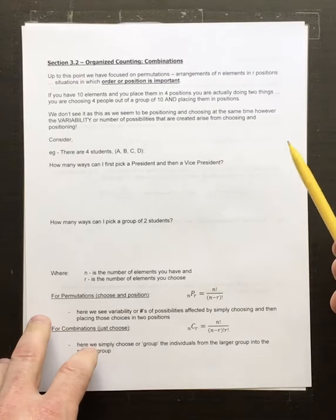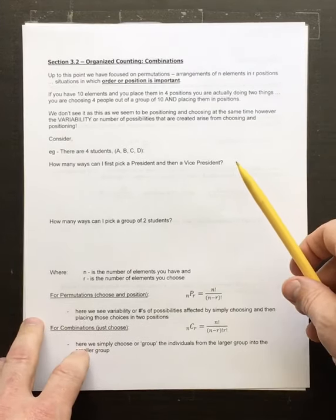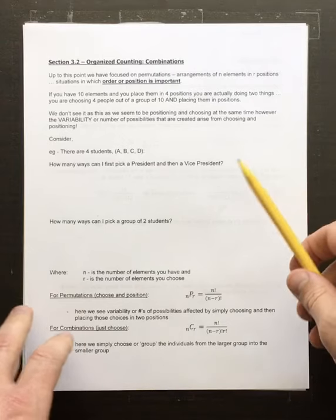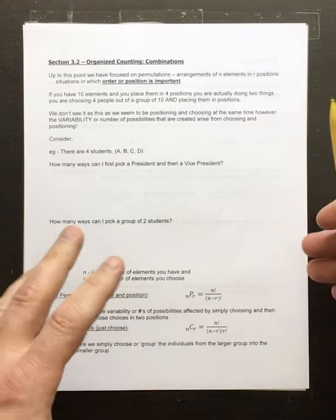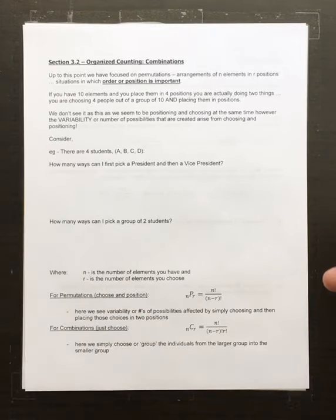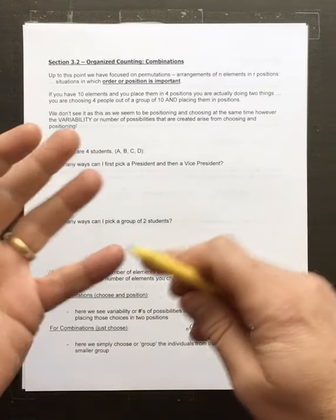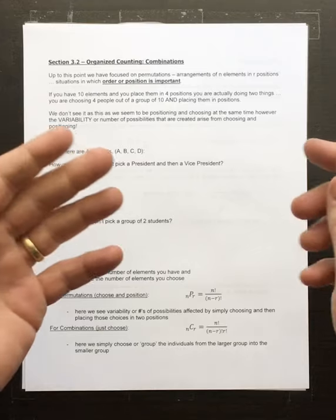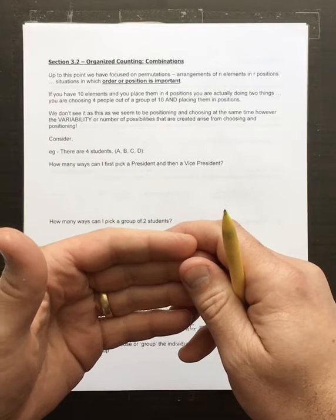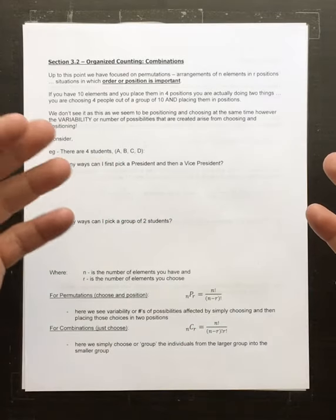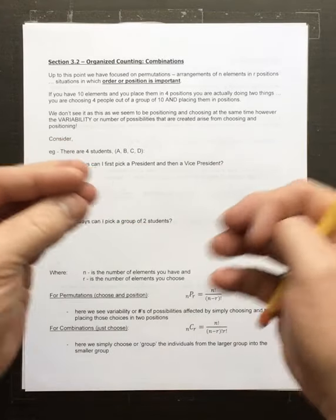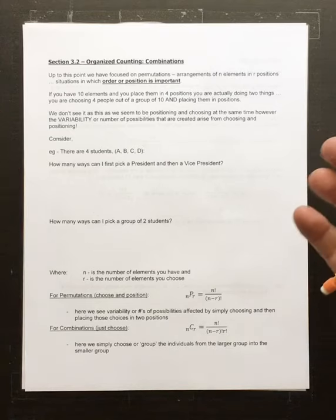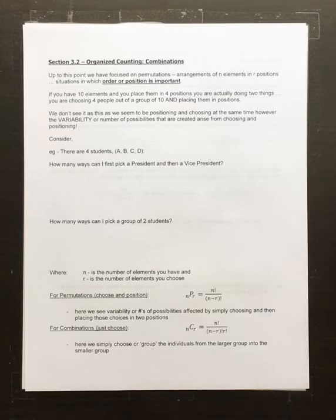When you're doing organized counting and putting things in positions where position is relevant, that's a permutation. A combination is just choosing things — it's doing the first half but not the second half. It's not choosing and then putting in order, it's just choosing. If I choose letters from the alphabet, I just have a sack of letters — I don't put them into a word.